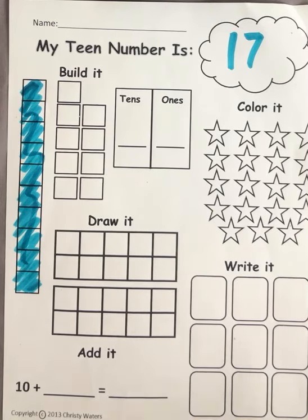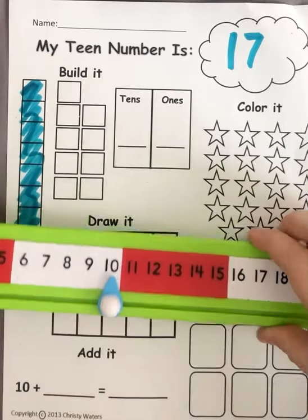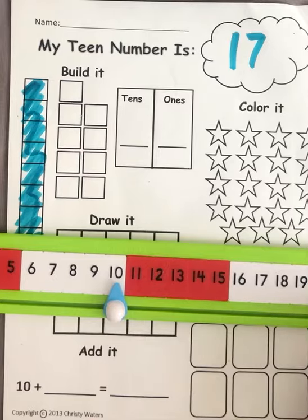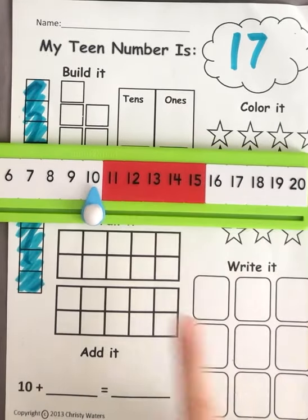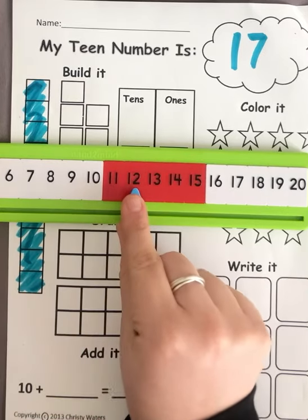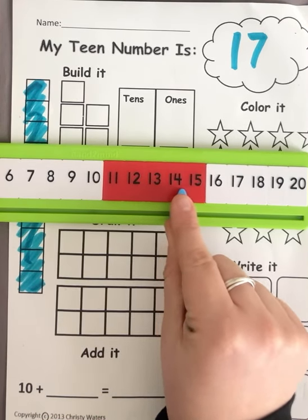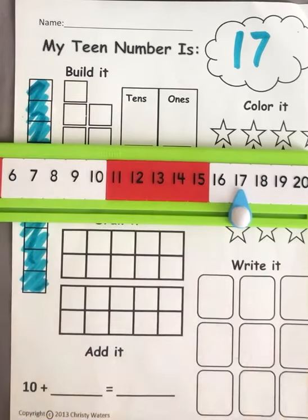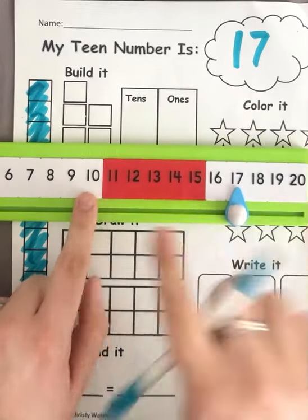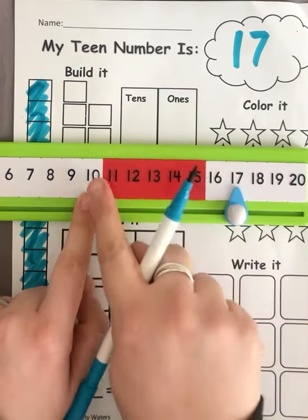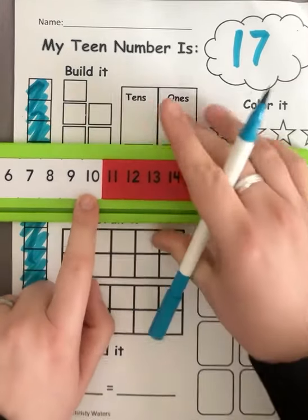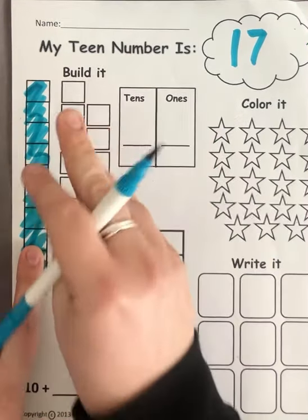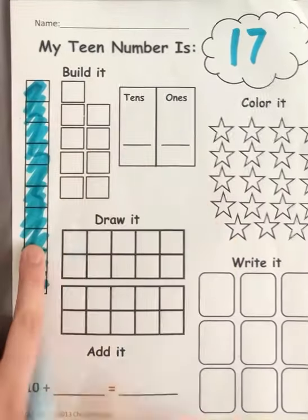Now I want to know how many more — if I'm at 10, how many of these little blocks, these ones, do I need to get to 17? Let's see how many jumps it takes. One, two, three, four, five, six, seven. It took seven jumps or seven skips to get to 17. So if I start at 10 and I want to get to 17, I need seven more jumps or seven more blocks.